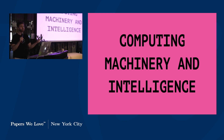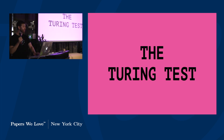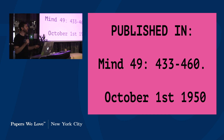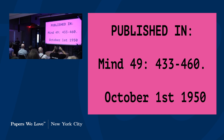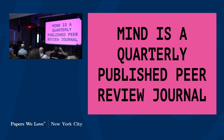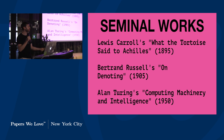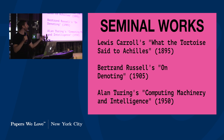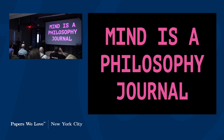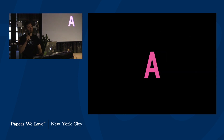My name is Matthew Bergman. I'm here to talk to you today about computing machinery and intelligence, also known as the imitation game paper, also known as the Turing test paper. To give some context, it was published in Mind 49 on October 1st, 1950 — 68 years ago. Mind is a quarterly published peer-reviewed philosophical journal, and plot twist: this is a philosophical paper.